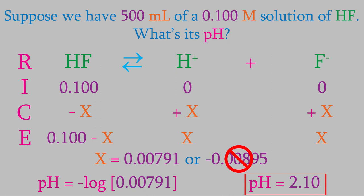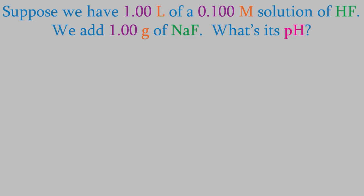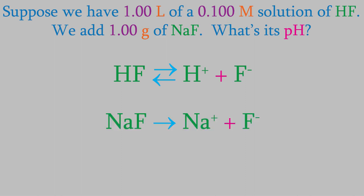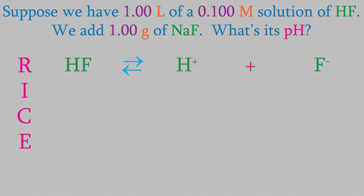So that's the pH of this solution before we use Le Chatelier's Principle to cause the reaction to shift. Now suppose we add 1.00 gram of sodium fluoride to the solution — what will be the new pH? Sodium fluoride is soluble, so it breaks up into sodium and fluoride ions. That means there will be more fluoride ions in the reaction, and that'll shift the reaction to the left. The sodium ions are just spectator ions, so we can ignore them. The setup is not too different from the problem we just did — we set up a RICE table with the same reaction.